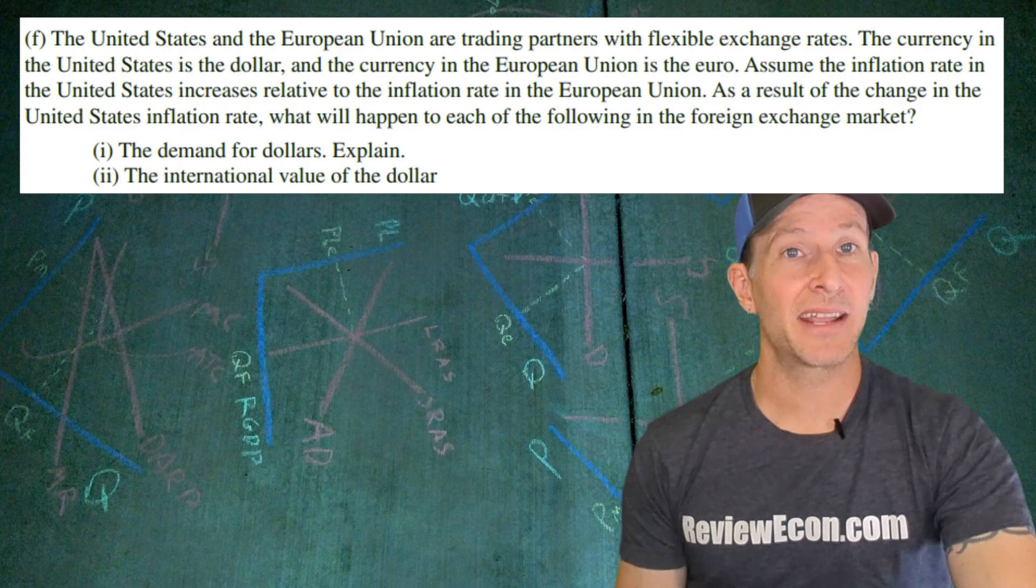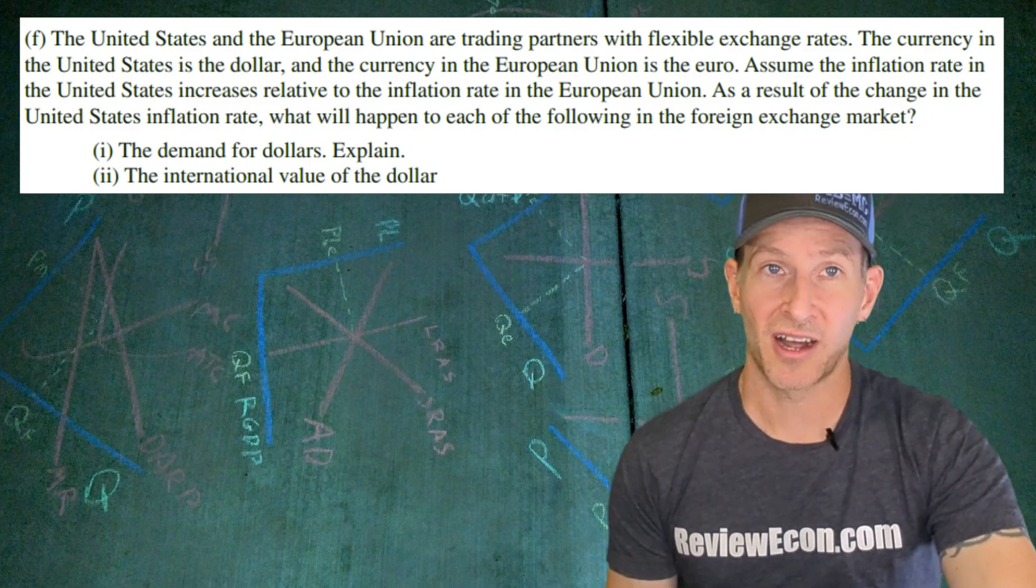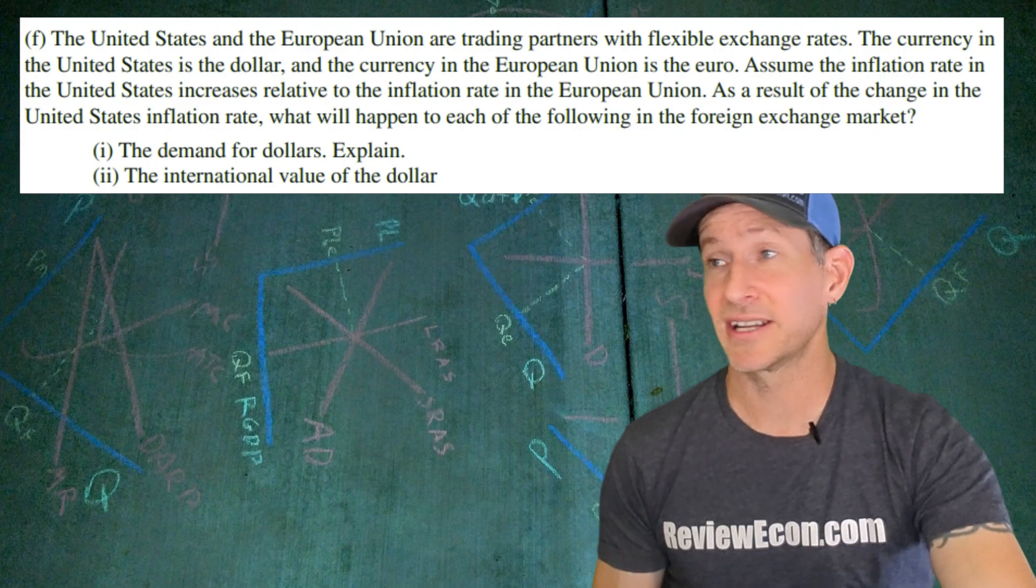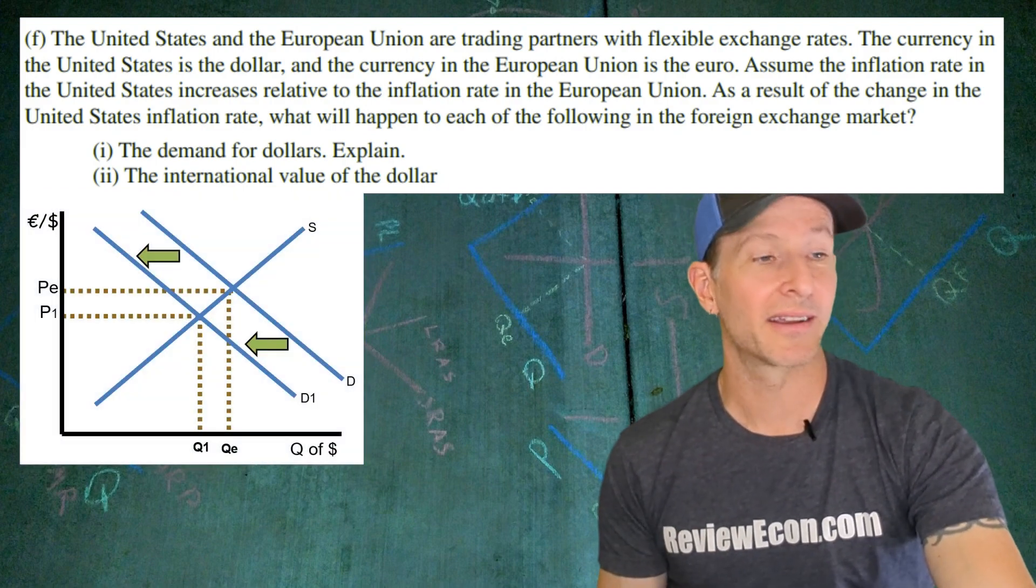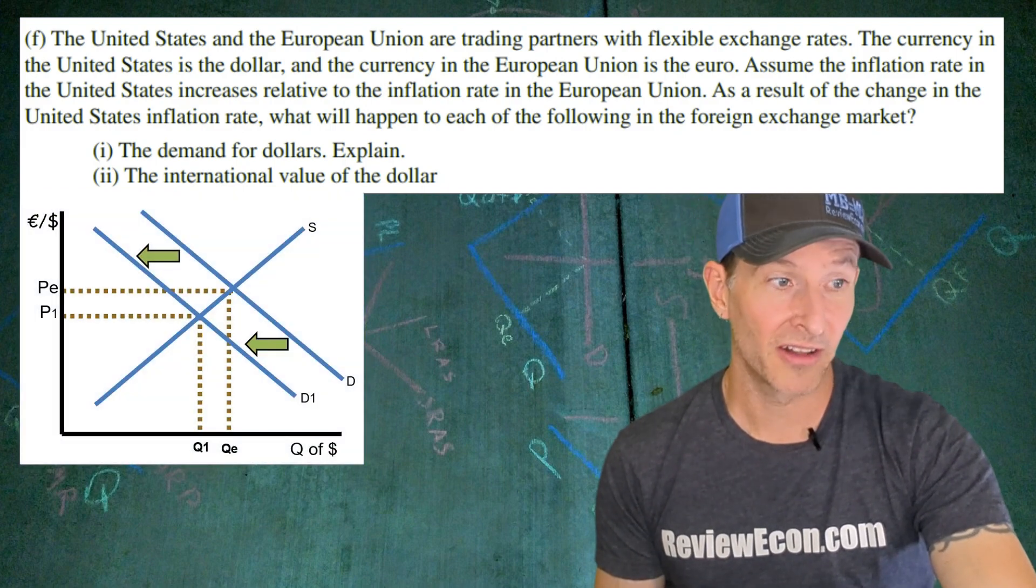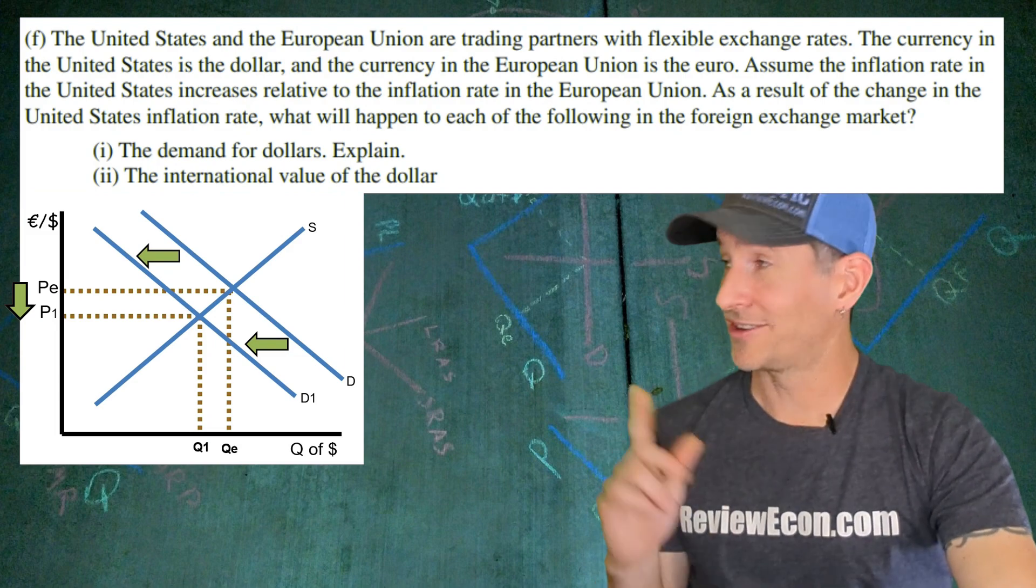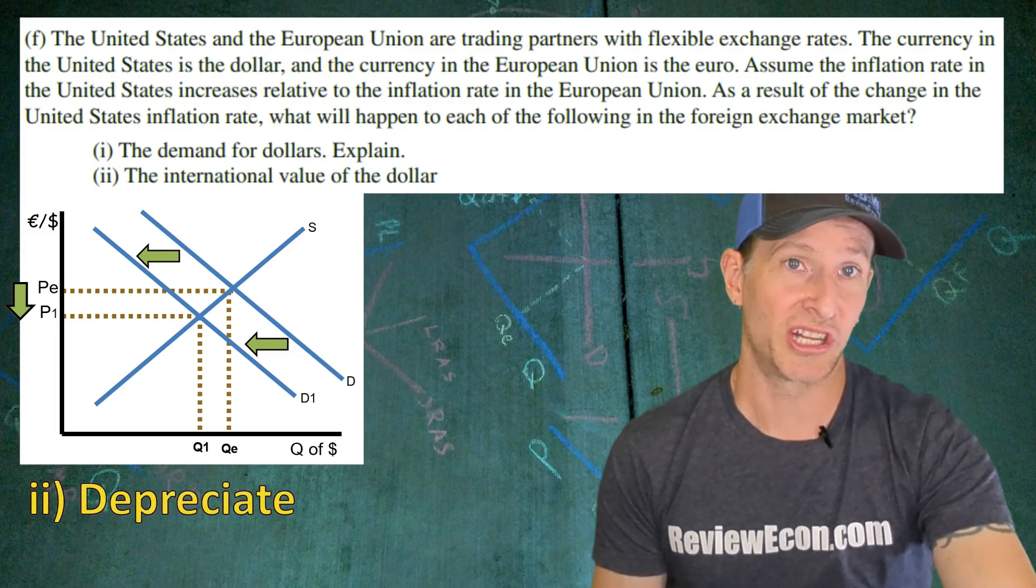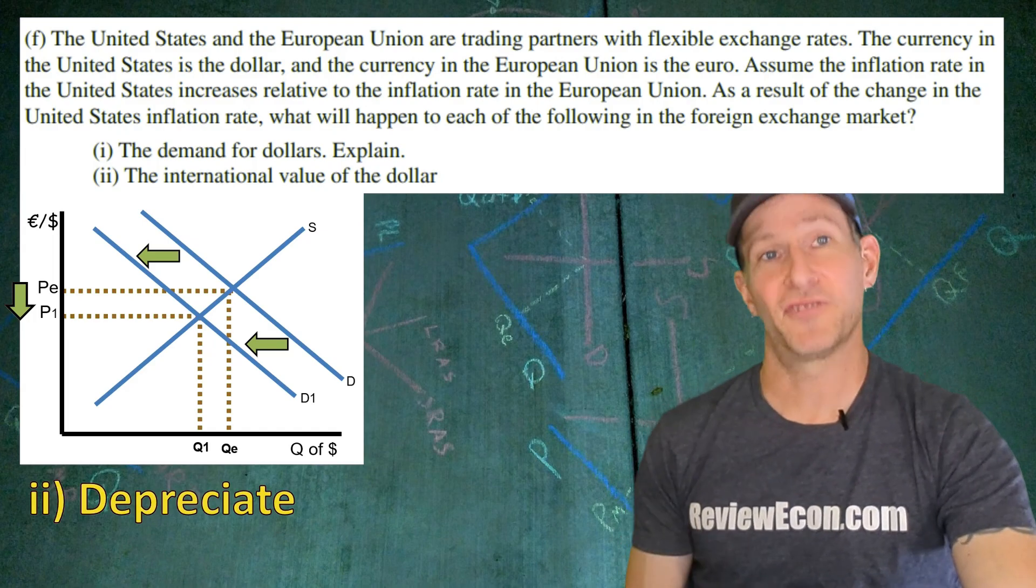For part FII we have to state what will happen to the value of the US dollar as a result. The demand curve for dollars is going to decrease and the decrease in the demand for the dollar causes the value of the currency to fall. Simply say depreciate which is what it's called when the exchange rate falls.